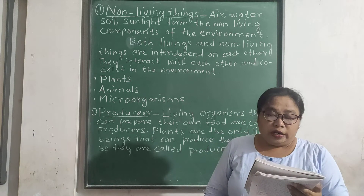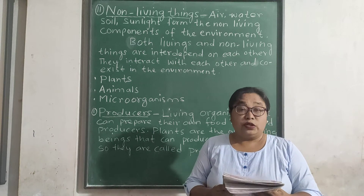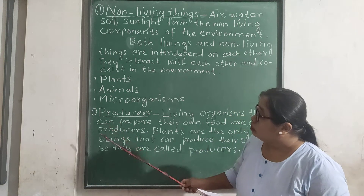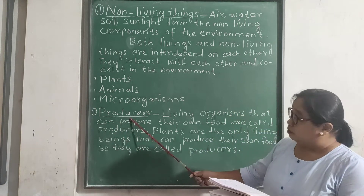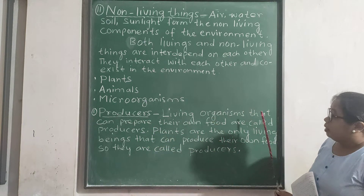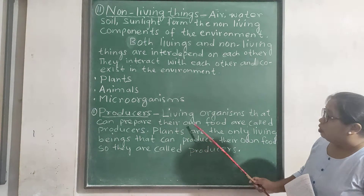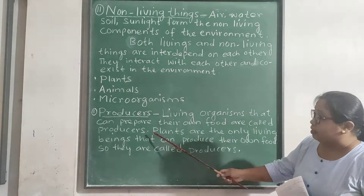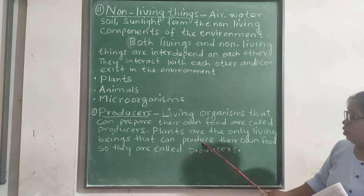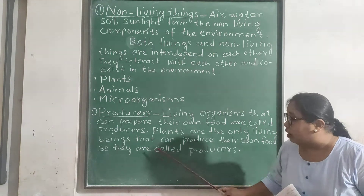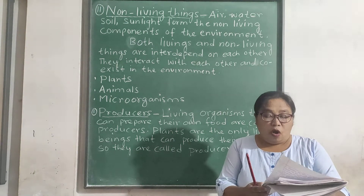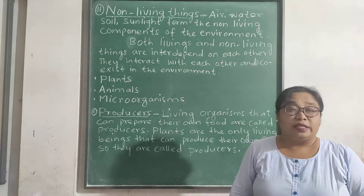These living organisms can be further categorized into the following groups. Number 1: Producers. Living organisms that can prepare their own food are called producers. Plants are the only living beings that can produce their own food, so they are called producers. They prepare their own food through the process of photosynthesis.